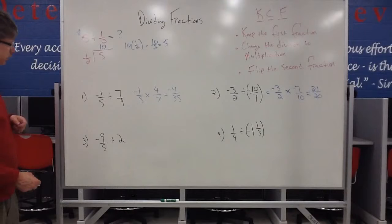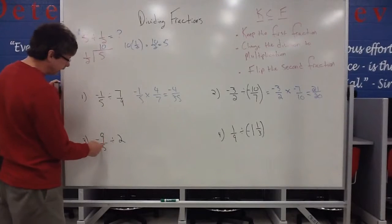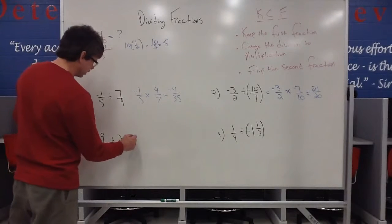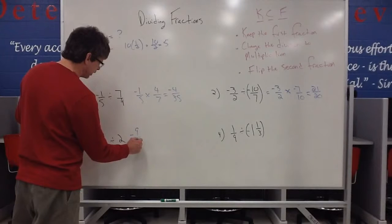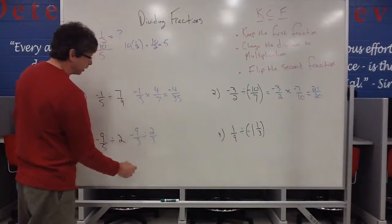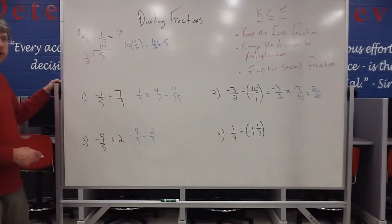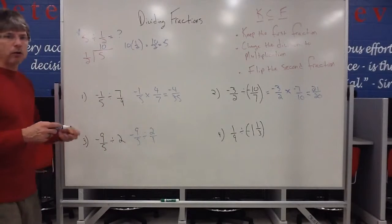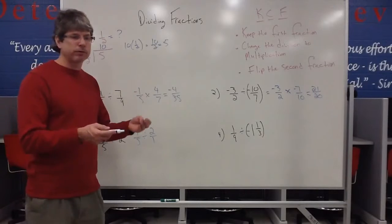So keep, change, flip works pretty nice. Negative nine-fifths divided by two. First off, I need to see that two as a fraction. So I can change two to a fraction by putting that two over one. So anytime I have a whole number, remember, a whole number, if I just put that over one, it becomes a fraction.